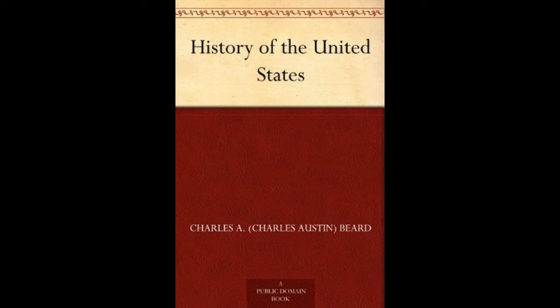As things now stand, the course of instruction in American history in our public schools embraces three distinct treatments of the subject. Three separate books are used. First, there is the primary book, which is usually a very condensed narrative with emphasis on biographies and anecdotes. Second, there is the advanced text for the 7th or 8th grade, generally speaking an expansion of the elementary book by the addition of 40 or 50,000 words.